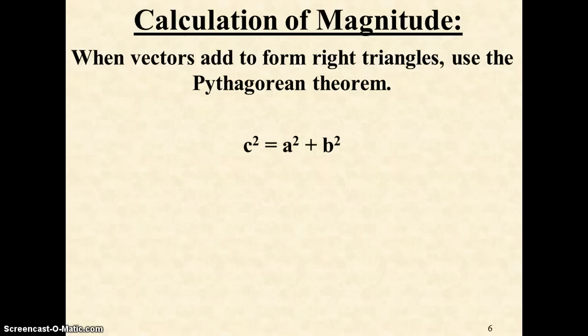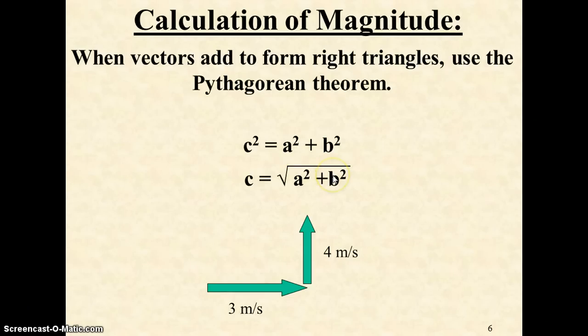To actually get the size of this vector, we use the Pythagorean theorem, where c represents the long side, the hypotenuse, and a and b represent the sides. If you solve for that length, you get the square root of the addition of the other sides squared. As an example, if we had a 3 meter per second current with the swimmer moving at 4 meters per second across, 3 squared plus 4 squared gives you 25. The square root of that gives you a magnitude of exactly 5 meters per second.